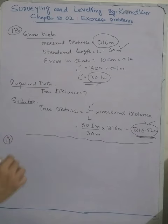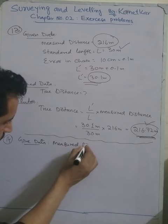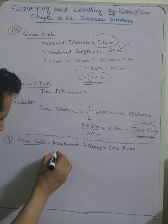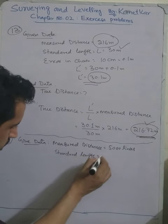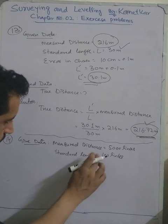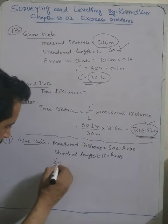Problem number 14 states that the length of a line measured with a Gunter chain was found to be 5000 links. The chain was 0.2 links too short — find the true length of the line. Given data: the measured distance was 5000 links. The standard length of the Gunter chain is 100 links, but during measurement the chain was 0.2 links too short.